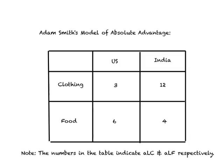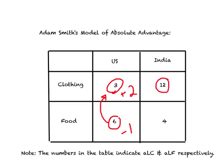Now let us look at how the world gains by foreign trade. In the US, you require six workers to produce one unit of food output. Suppose the US decides to reduce output of food by one unit — six workers are freed from the food industry and move to the clothing industry. Using those six workers in the clothing industry, output of clothing goes up by plus two units.